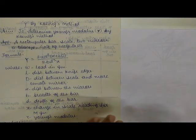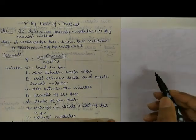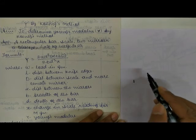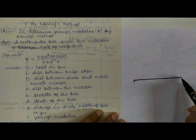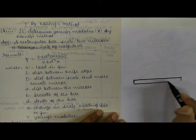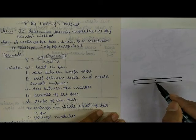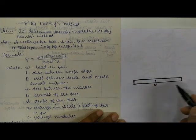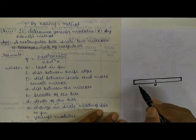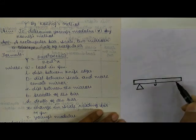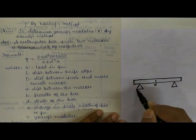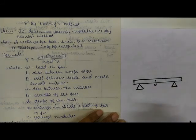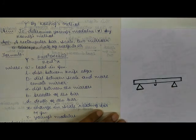Let me first explain the methodology of this experiment. We have a wooden beam, and at the centre we have a hanger to attach the mass. We have to find the Young's modulus of this wooden beam. First, we place this beam on two knife edges, which are fixed to the table or a stand, and we keep the beam on them.